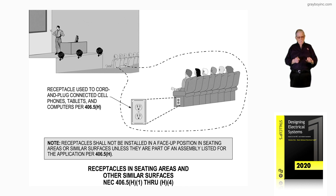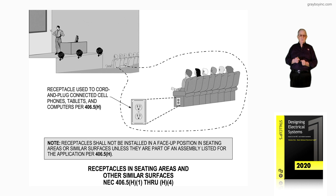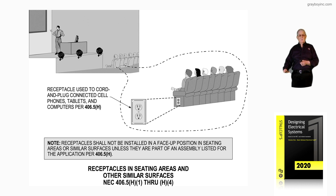If it was an assembly that you could push and it'd pop up, and push it back down and you'd have a level surface to put your arm, that would be okay. Or you could put the receptacle in the side. You could even have a receptacle with a divider between those folks that are sitting there to separate each other.